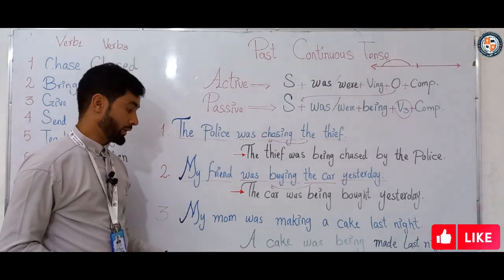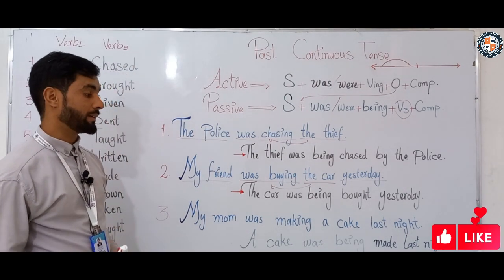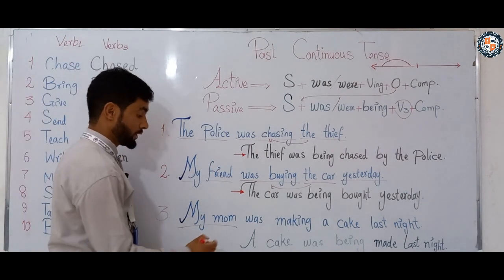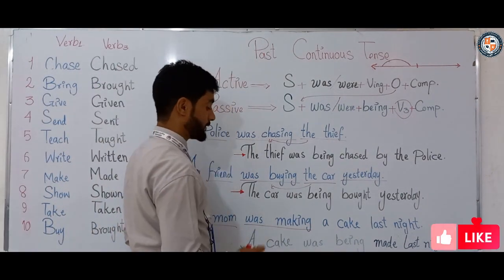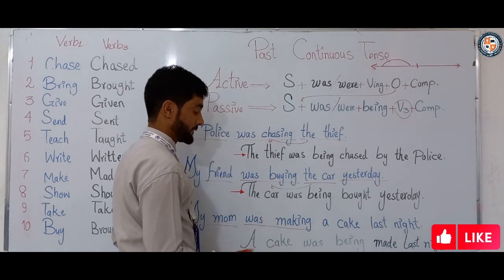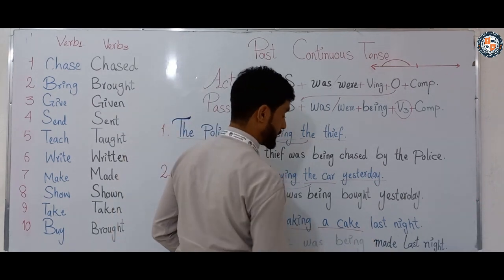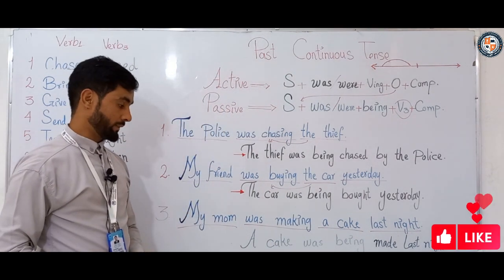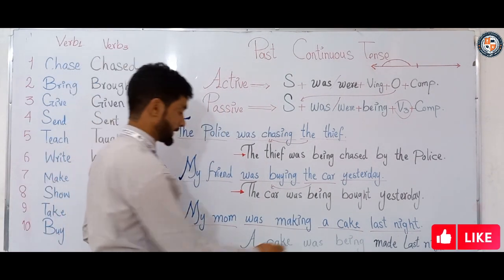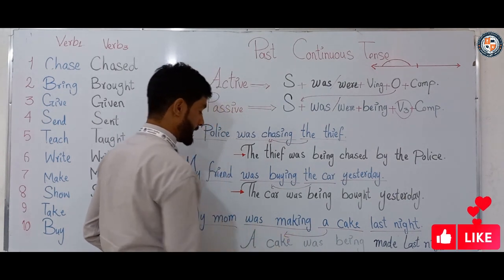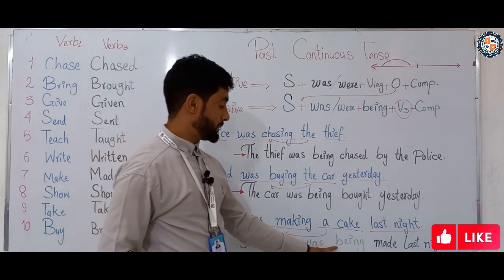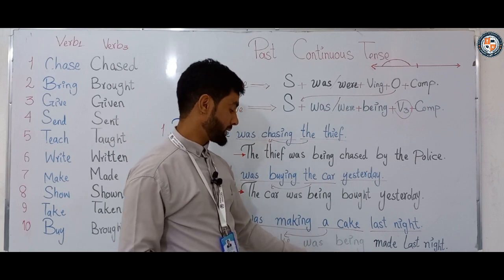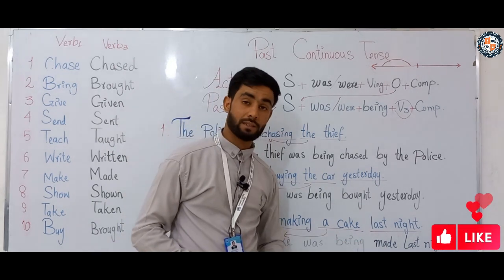Sentence number three: 'My mom was making a cake last night.' My mom is the subject, 'was making' is the verb form of past continuous in the active, 'a cake' is the object, and 'last night' is a time expression. When we change it to passive, we bring the object to the beginning: 'A cake was being made last night.' 'Was being made' is the verb form of past continuous in the passive.